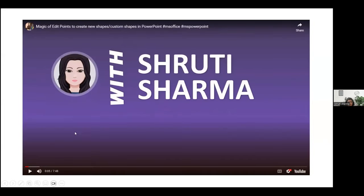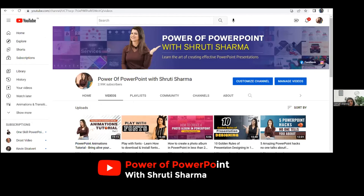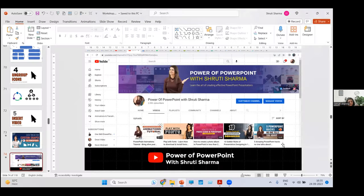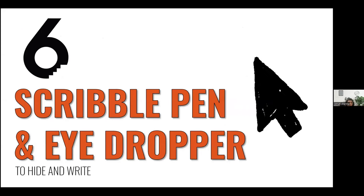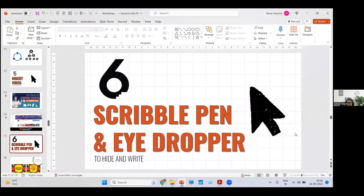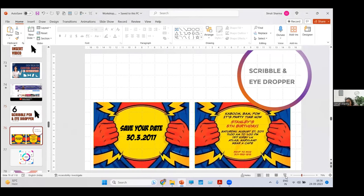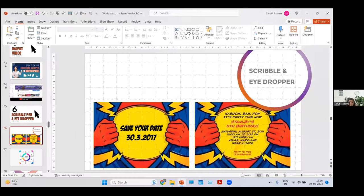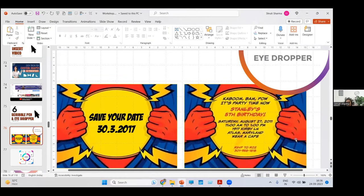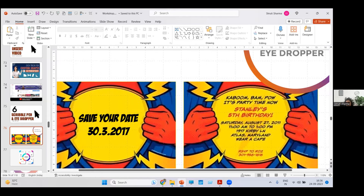That's my YouTube channel — Power of PowerPoint with Shruti Sharma — in case any of you would like to revise the tools you're learning. Moving on to the next tool: Scribble Pen and Eyedropper. Sometimes you want to use an image or e-invite that already has text on it. This tool will help you with single color plain backgrounds only — if the image has texture or gradient, it won't work.